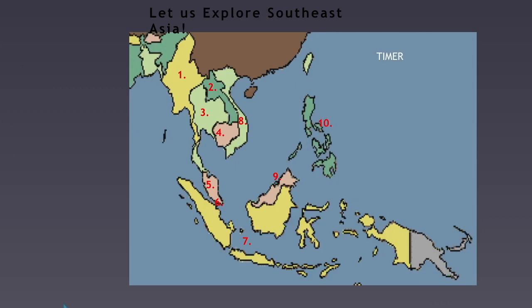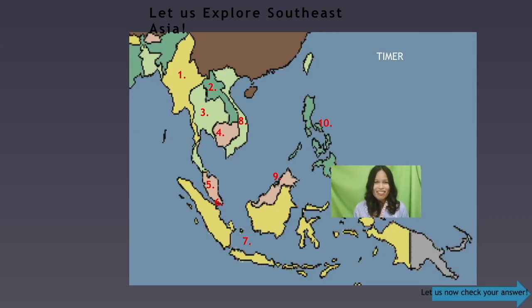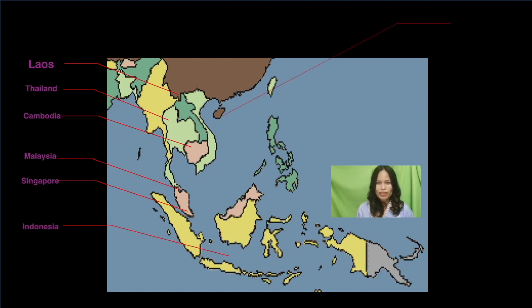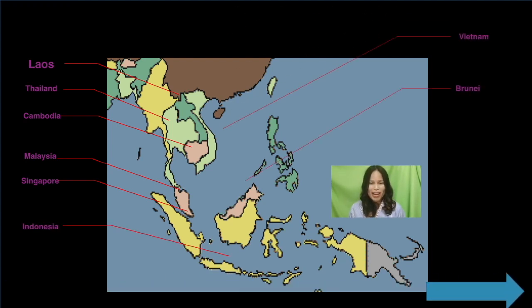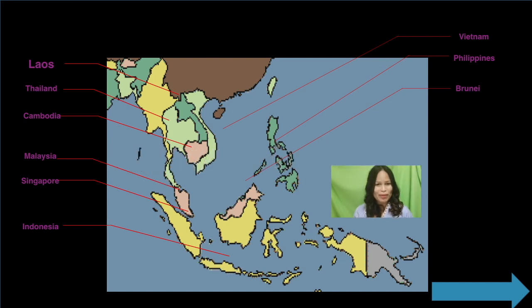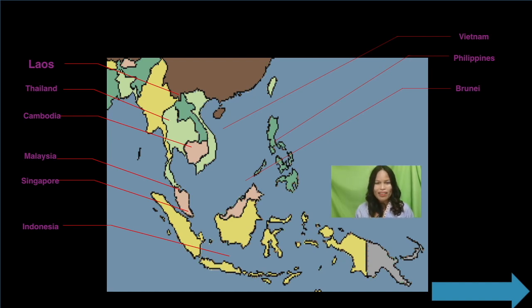Ten minutes is over. Let us check your answers. The Southeast Asian countries are Laos, Thailand, Cambodia, Malaysia, Singapore, Indonesia, Vietnam, Brunei, and Philippines. For your information, Singapore is an amalgamation of Malaysian and ethnic Chinese. Malaysia, Brunei, and Indonesia are linguistic, religious, and cultural siblings. Prior to the introduction of Islam and Western colonization, the whole region was influenced in varying degrees by China and India. The Philippines is a separate case because we were influenced by the Spaniards and Americans.